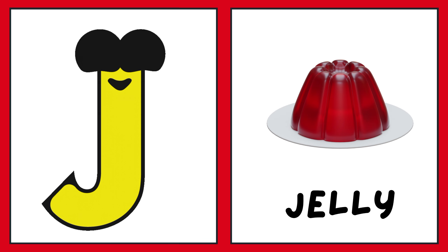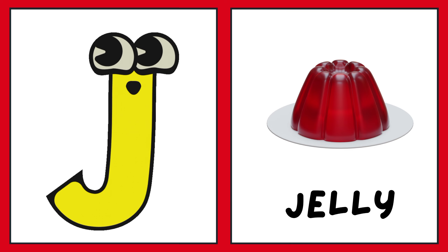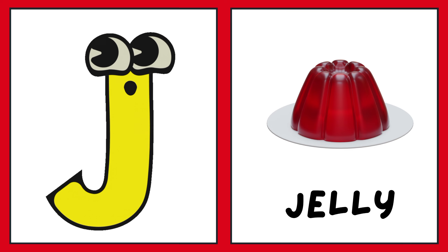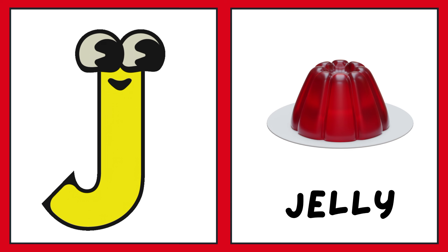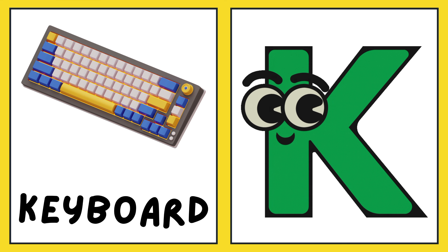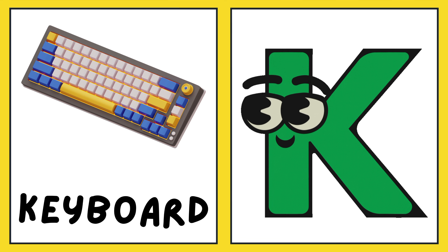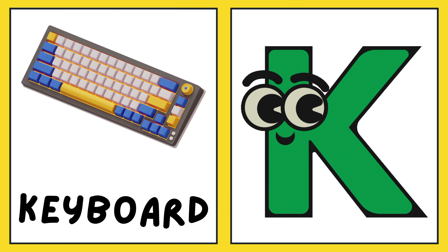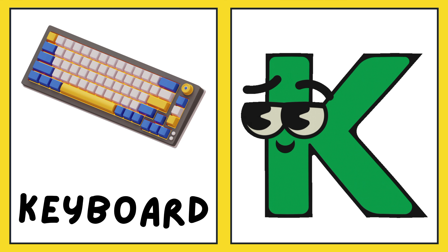J is for jelly. G, g, jelly. G, jelly. J, jelly. A is for keyboard. Ch, keyboard. Keyboard. Keyboard.